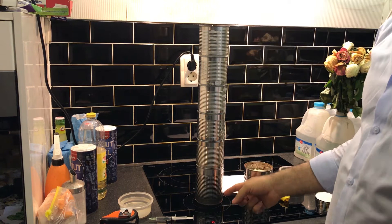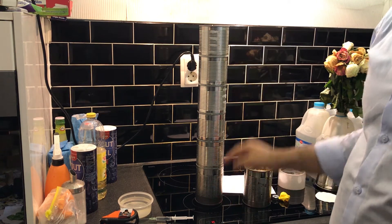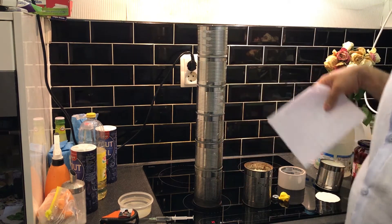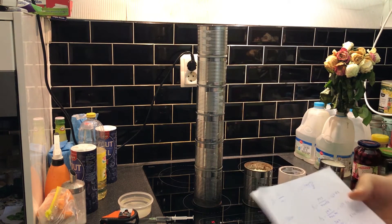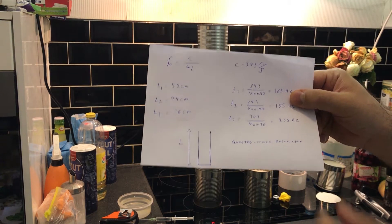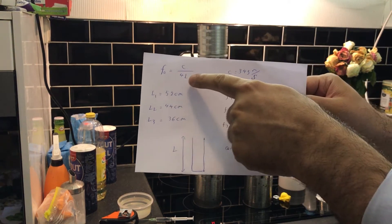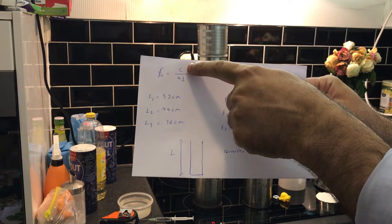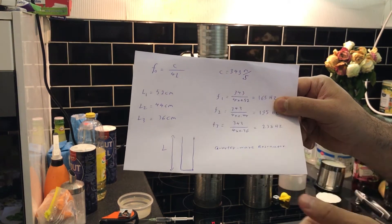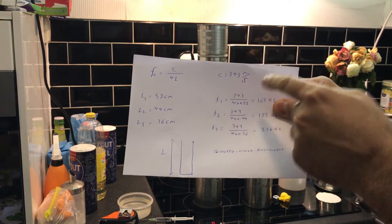Okay, so what do we have here? We have actually a pipe that is closed from one side and is open from another side. Acoustic people they call this a quarter wave resonator. So for a quarter wave resonator we have a resonant frequency which is C, the speed of sound, divided by four times L. L is the length of the pipe.